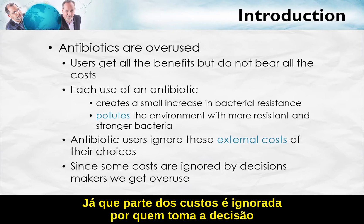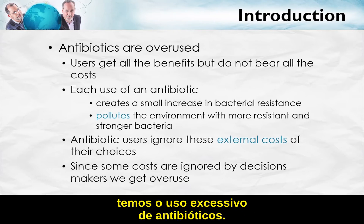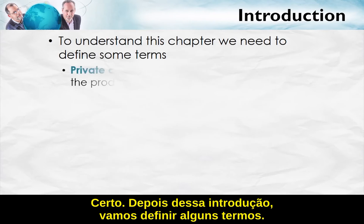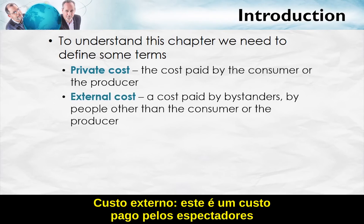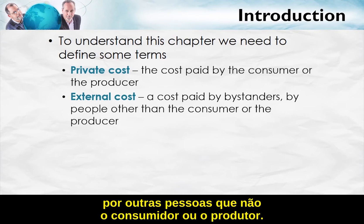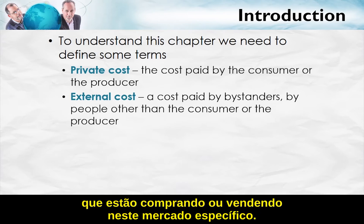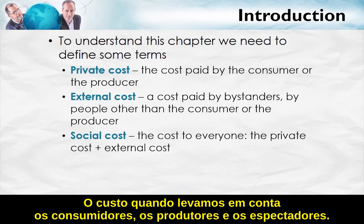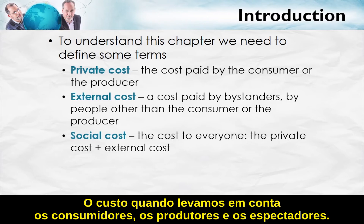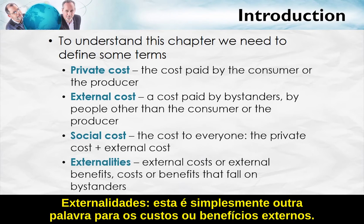When antibiotic users ignore the external costs of their choices, we get overuse — since some costs are ignored by the decision makers, we get overuse of antibiotics. Let's define some terms. Private cost: this is the cost paid by the consumer or the producer. External cost: this is a cost paid by bystanders — by people other than the consumer or the producer. Social cost is the cost to everyone — consumers, producers, and bystanders — in other words, it's the private cost plus the external cost.